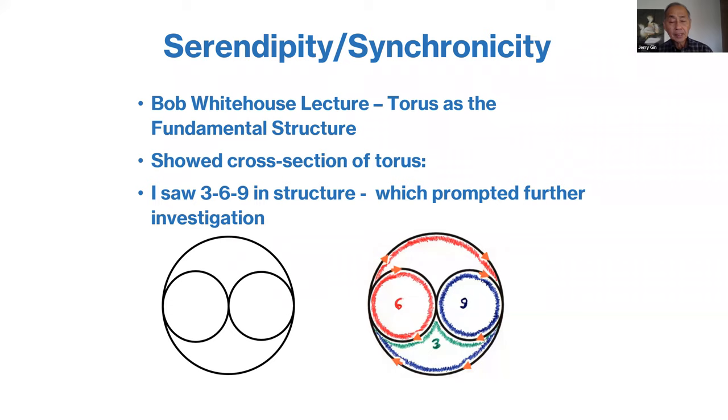Serendipity and synchronicity occurred when I was listening to a lecture by Bob Whitehouse, who was talking about the Arthur Young theory of process and discussed the torus. He showed a picture of the torus and a cross-section of the torus and the field surrounding it.